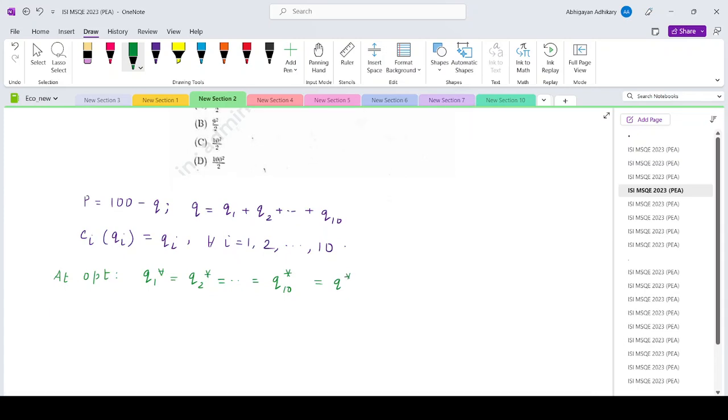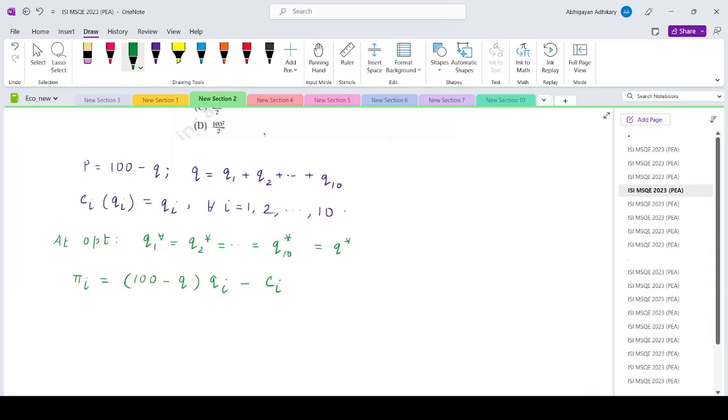If we take the ith firm's profit function, that will be 100 minus q into qi minus cost, which is ci. If we elaborate it out, q is basically, if I just keep qi minus summation i not equals to j qj times qi minus qi.